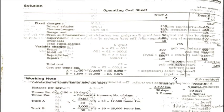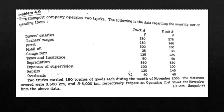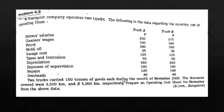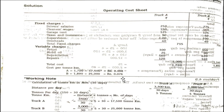Now we calculate variable expenses. Petrol is 300 for truck A and 350 for truck B. Mobile oil is 25 and 30. Depreciation is 560 and 620. Repairs is 120 and 140. Total variable charges are 1,005 for truck A and 1,140 for truck B. Total cost for truck A is 1,720 and for truck B is 1,890.